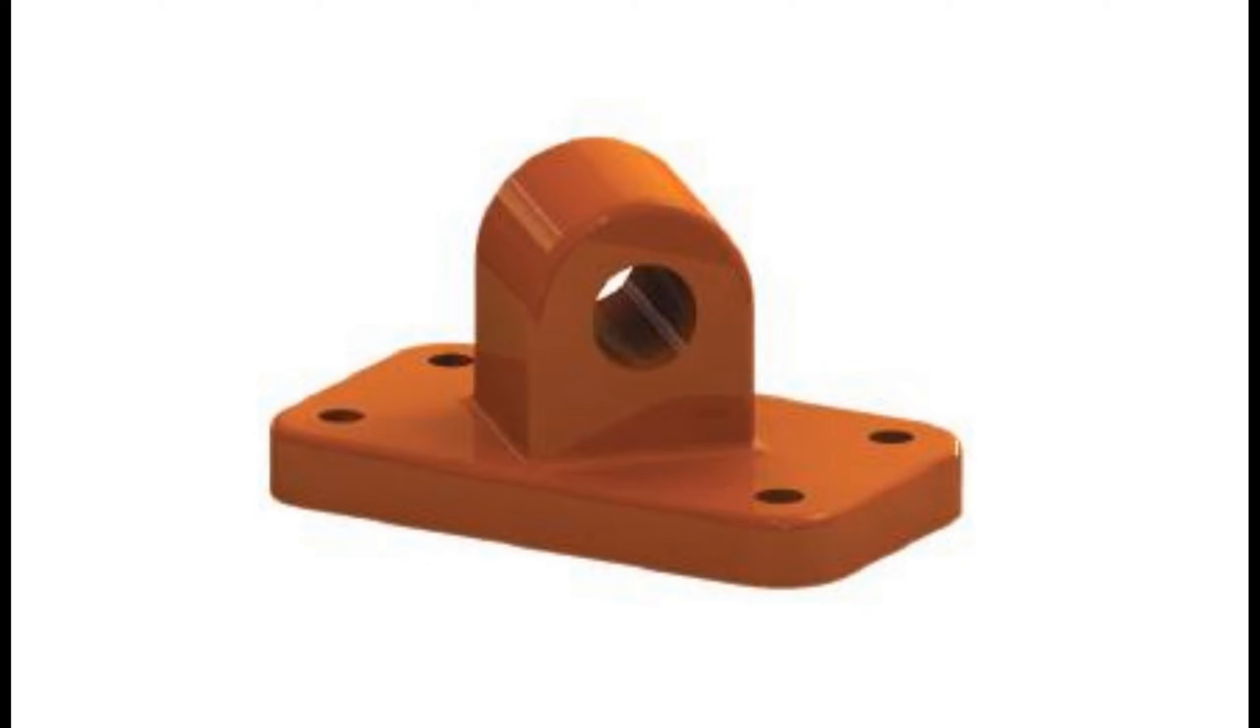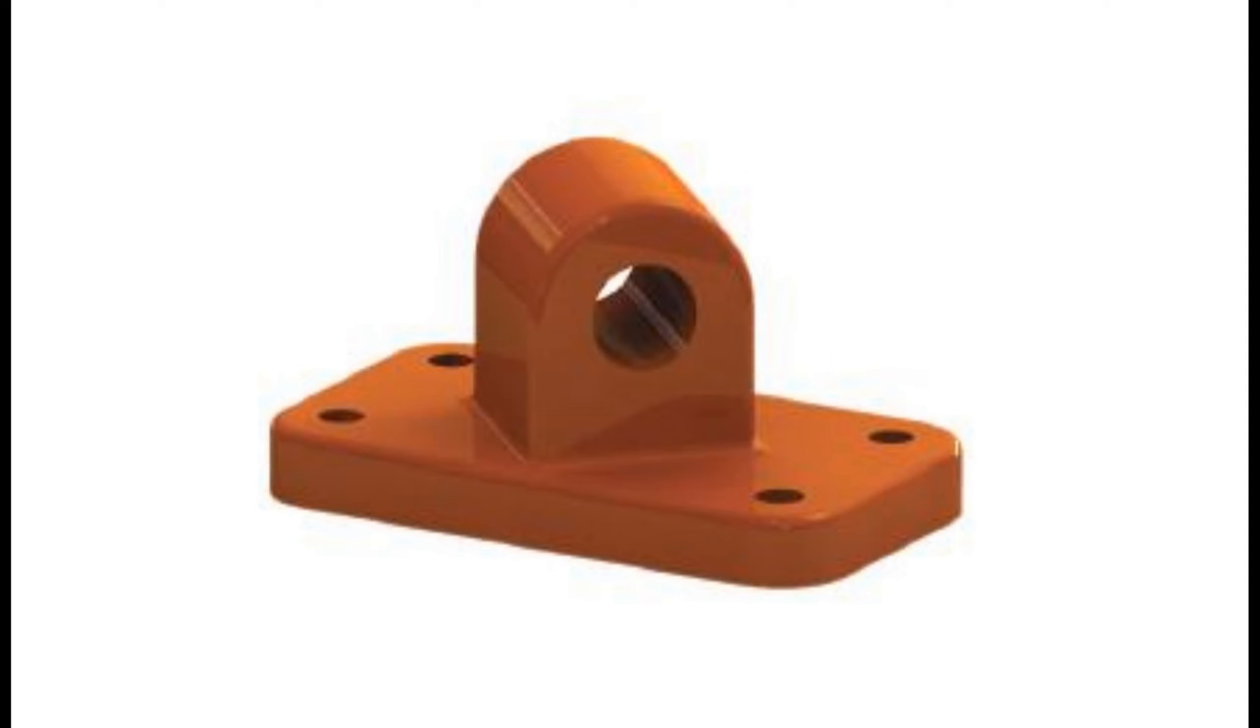So when we're using orthographic views, how do we portray something that is slanted or cocked, these sort of things. And so when you think of a top view, a front view, a side view, back view, bottom view, all those can be used to give you a better idea, but they're not going to give you a true representation of what you're actually looking at. And in order to give you a better representation, this is where we use auxiliary views.